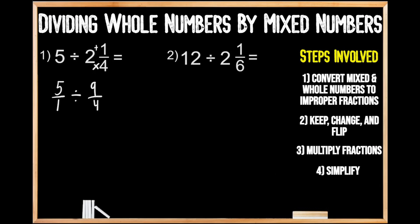Now we're going to move on to step number two, where we work through the division steps for dividing fractions: keep, change, and flip. Our first fraction we're going to keep the same — still five over one. Then we're going to change: instead of dividing, we're going to be multiplying. And then we're going to flip our second fraction, so the denominator becomes our new numerator and the numerator becomes our new denominator, giving us four-ninths.